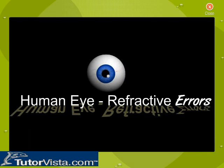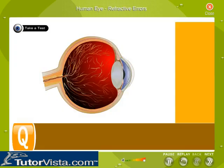Human Eye Refractive Errors. Displayed here is a section of a human eye. The function of each part will appear on the screen.